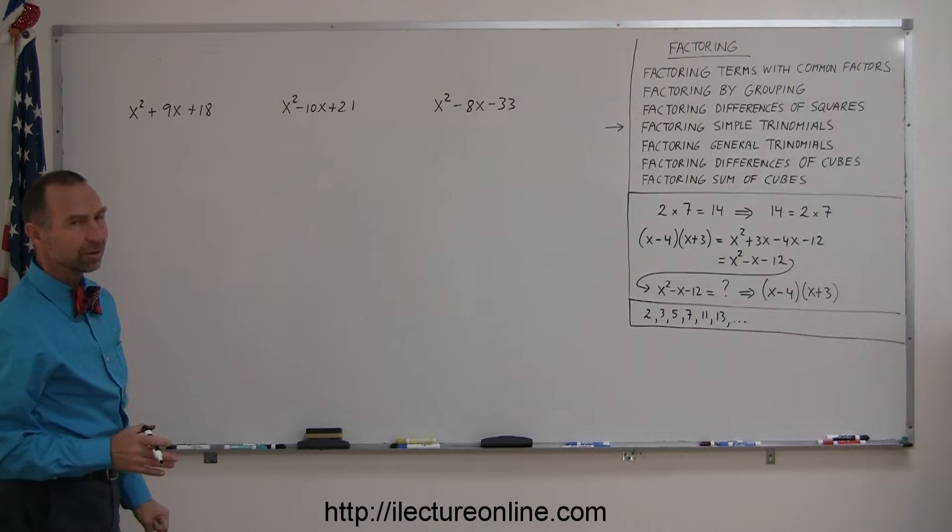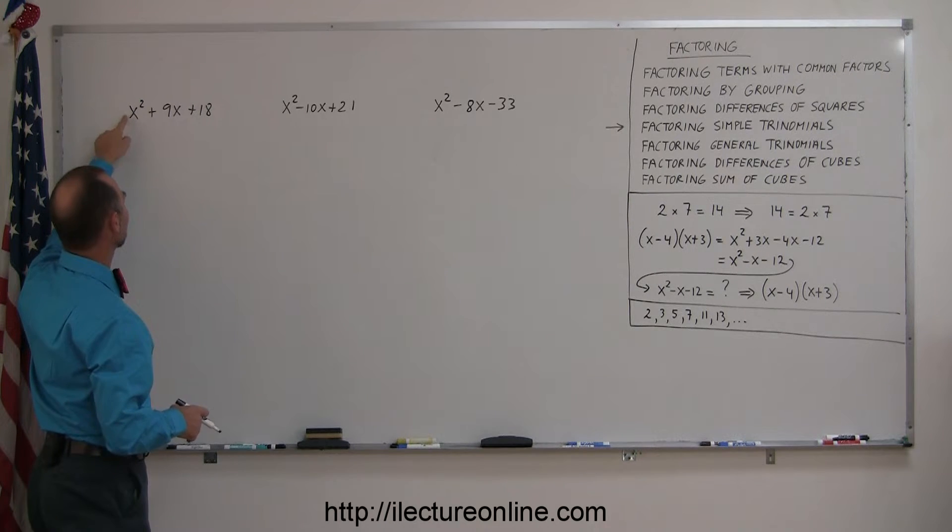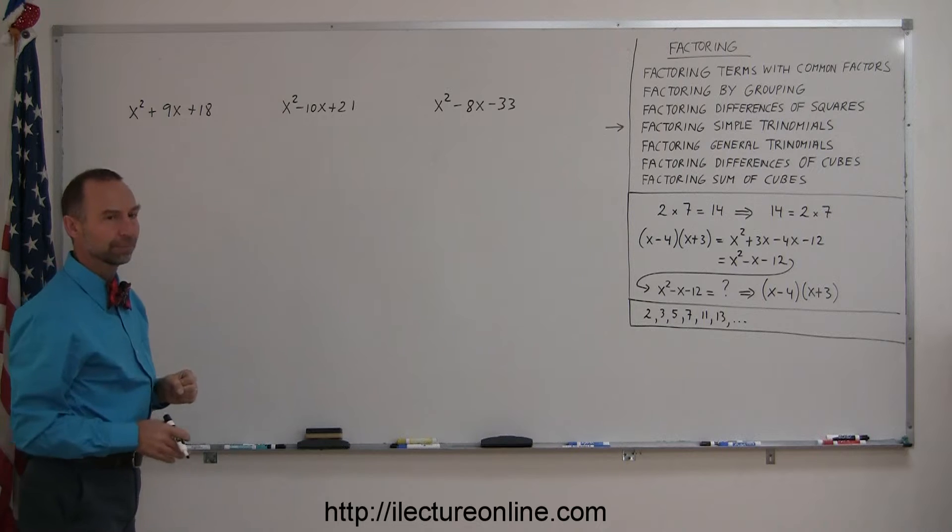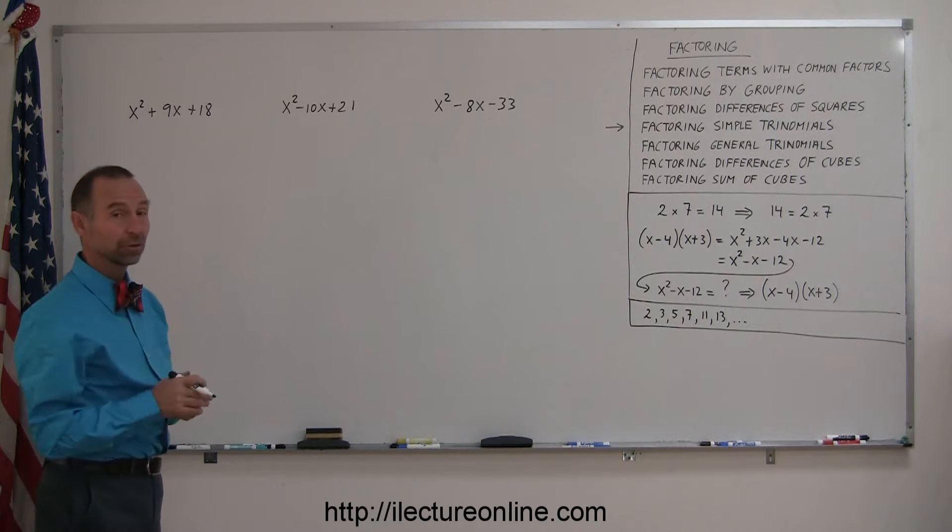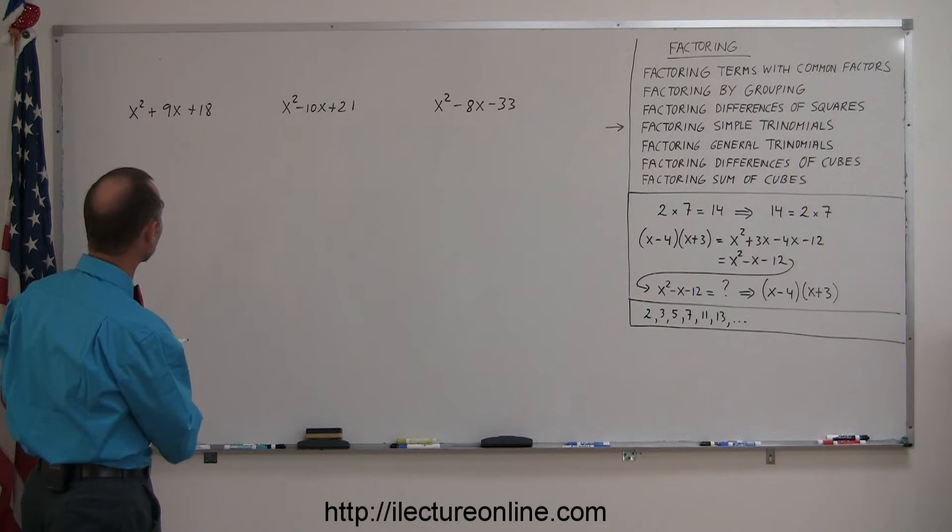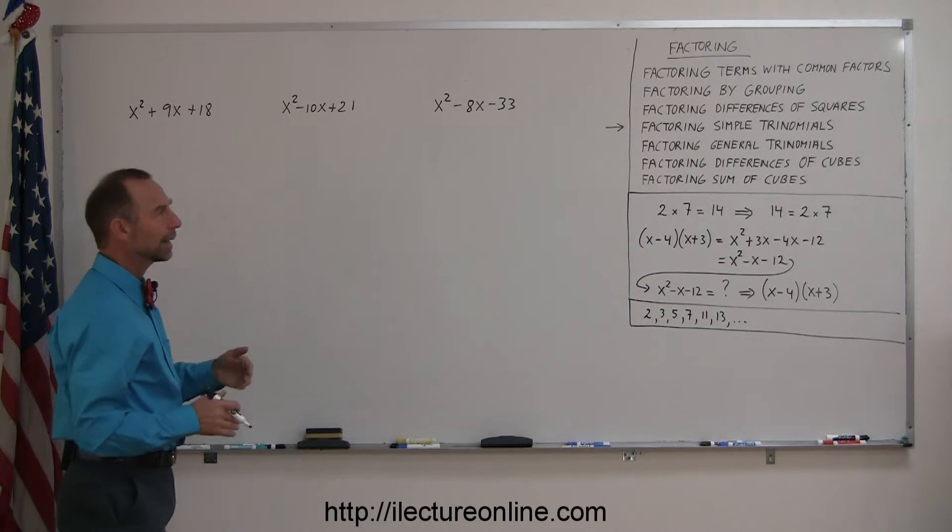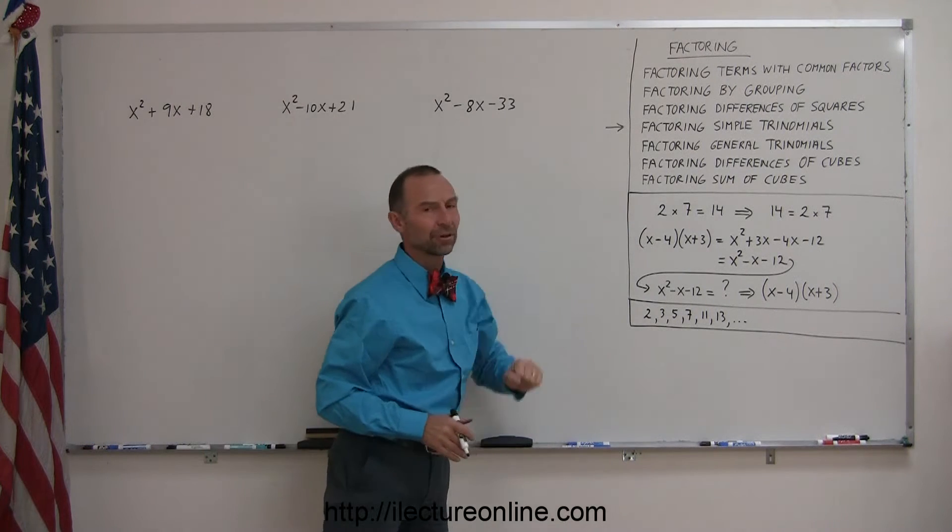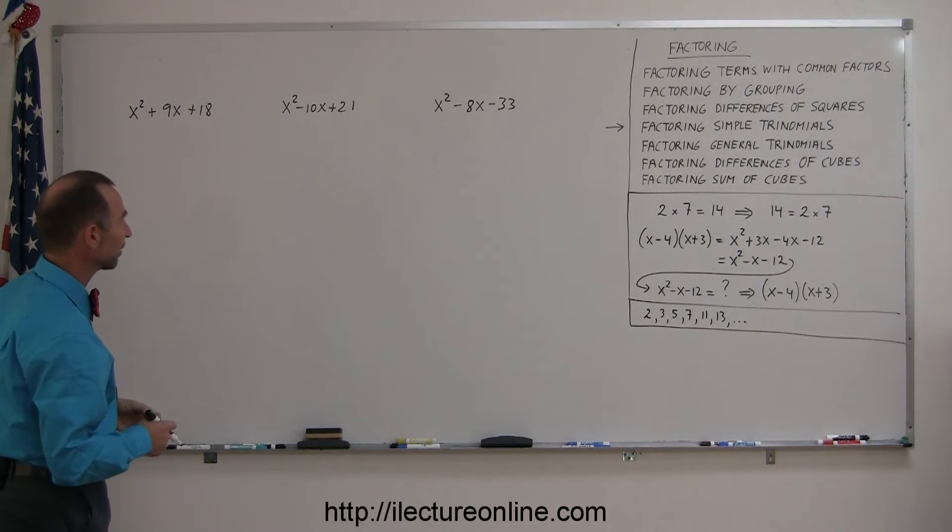I call them simple because the first term, the x squared term, has a coefficient of one. That makes them relatively simple. We'll start showing how to factor trinomials that have the first term with a coefficient of one. Later on, we'll do the more general type of trinomials where the first term can have another coefficient other than one. That makes it a little bit more complicated. But let's start with these.